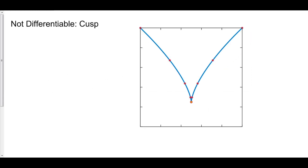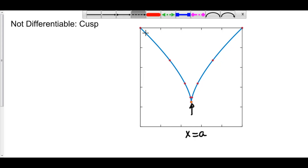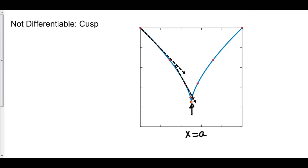The next type is called a cusp. A cusp is similar to a corner. However, if you look at the derivative from the left-hand side of this value — let's call this x equals a — the derivative is approaching a vertical line, approaching negative infinity to be exact. If you look from the right-hand side, the derivative is approaching positive infinity. Our tangent line becomes more and more steeply negative as we get closer and closer towards this cusp point at x equals a, approaching negative infinity.